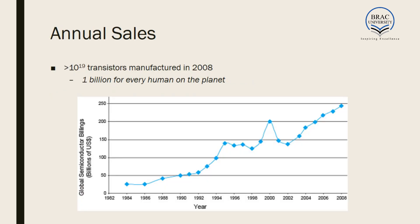About the financial aspects, we can see the curve of annual sales. In 2008, about 10 to the power 19 transistors were manufactured — that is 1 billion for every human on this planet. This is a huge number. From this curve we can see an upward trend; global semiconductor sales in billions of USD is rising at a very high rate and the rise is linear — at no point are sales decreasing. This is a very promising industry, which should inspire us more to learn about VLSI.